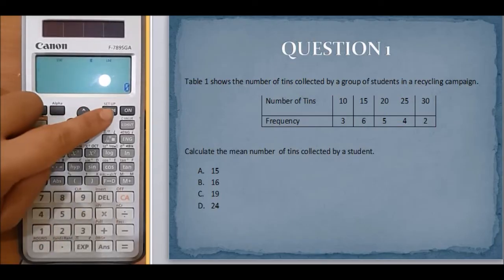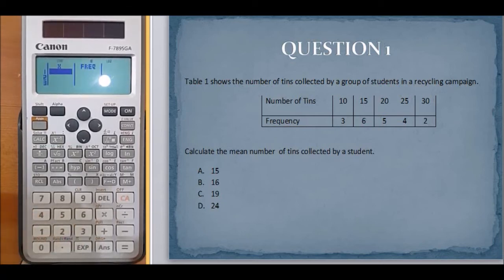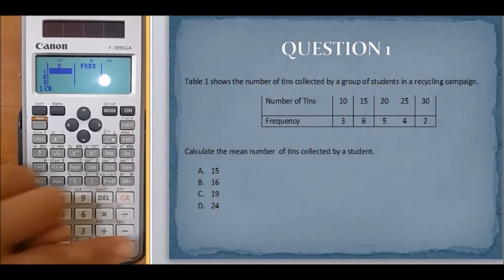Again, mode, three, one. Now we have the X column and the frequency column. Key in 10, 15.